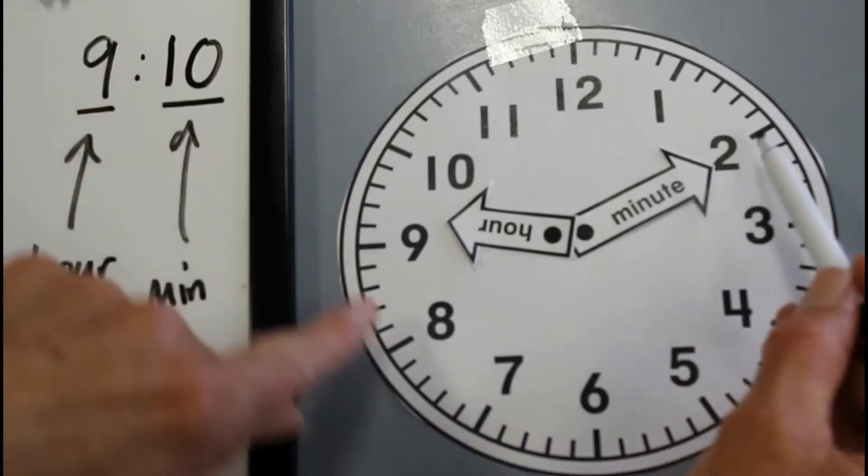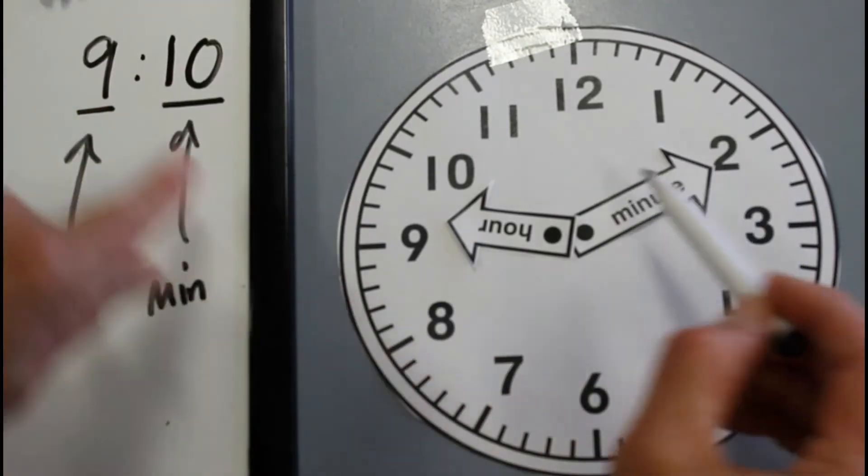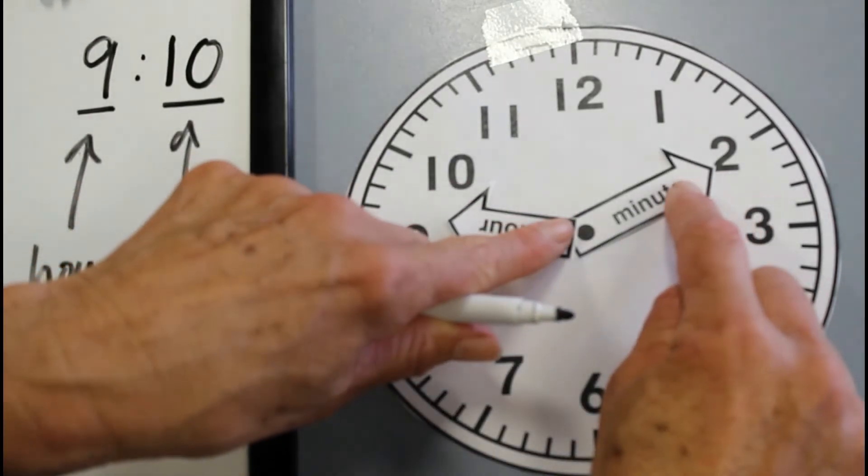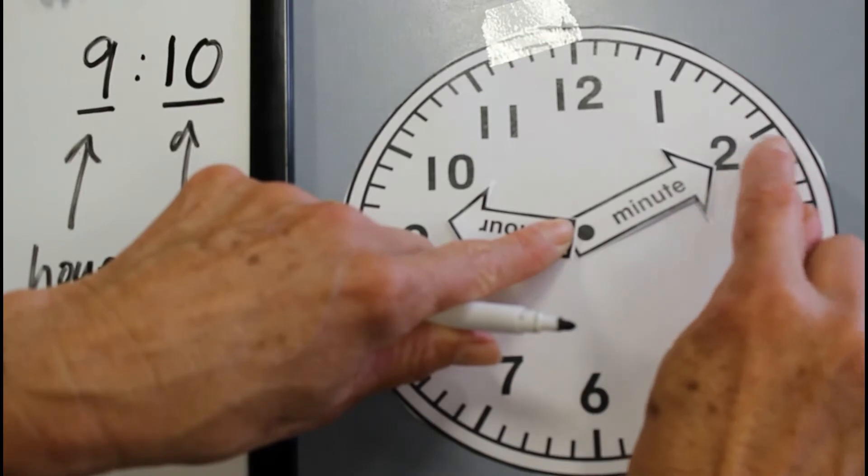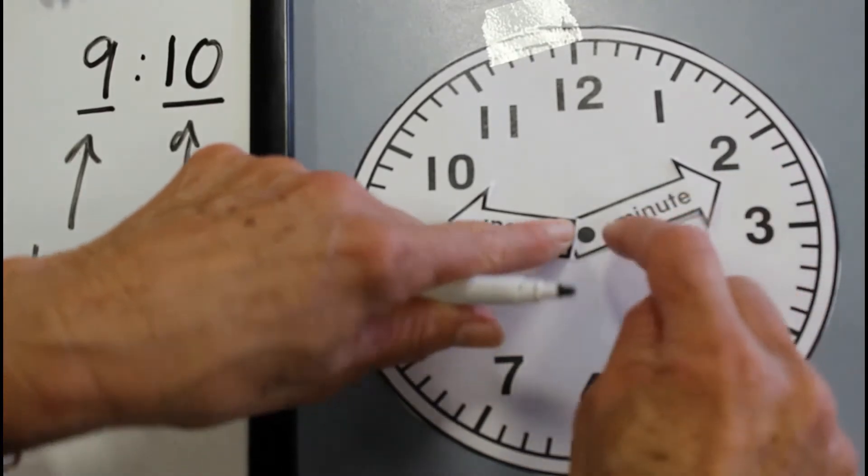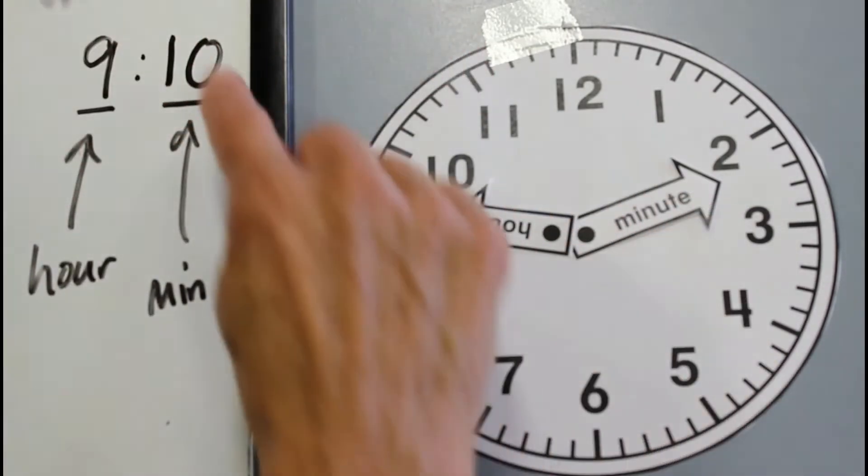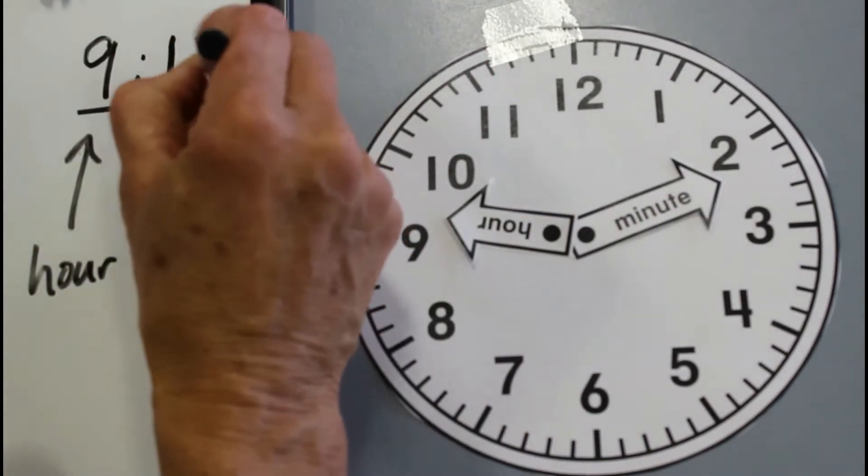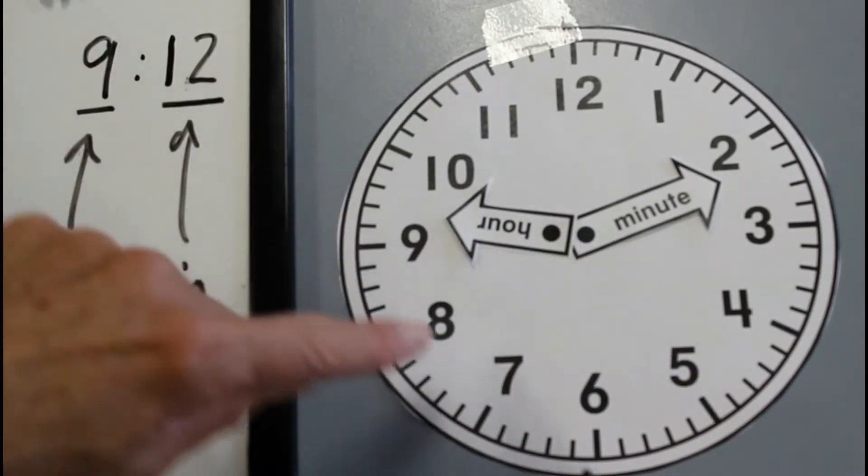So we know it's ten minutes past. That's telling us ten minutes. And this is telling us nine. If I was to just move it a little bit further to here. So that's ten, eleven, twelve. If I pointed it to there, then that would be now twelve minutes past nine. And I would write twelve minutes past nine. So it's nine, twelve.